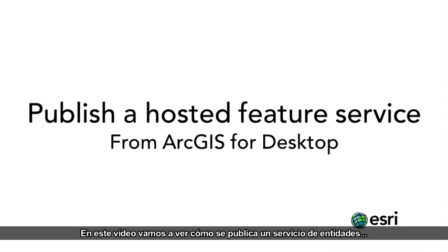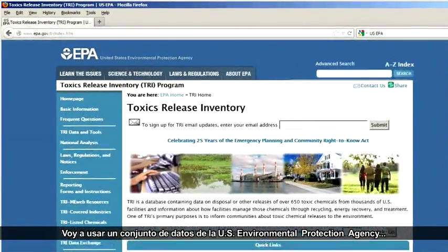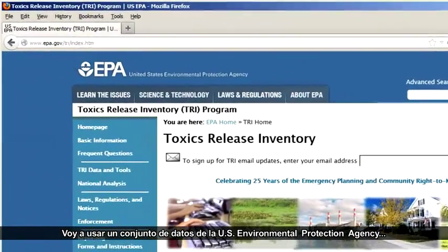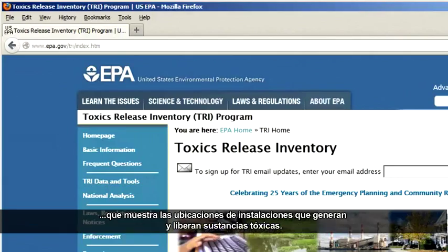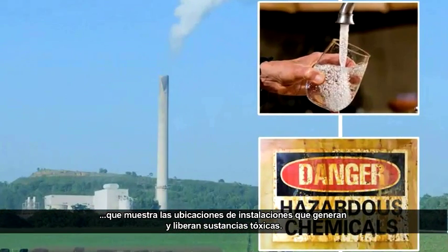In this video, I'll demonstrate how to publish a feature service from ArcGIS for Desktop to ArcGIS Online. I'm going to use a dataset from the U.S. Environmental Protection Agency that shows the locations of facilities that produce and release toxic substances.